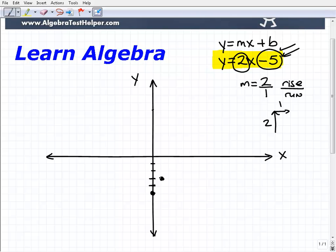I use the slope information as a set of driving directions to get to a second point that's on that line. Now I can simply draw a line through those two points, and I've graphed the line y equals 2x minus 5.